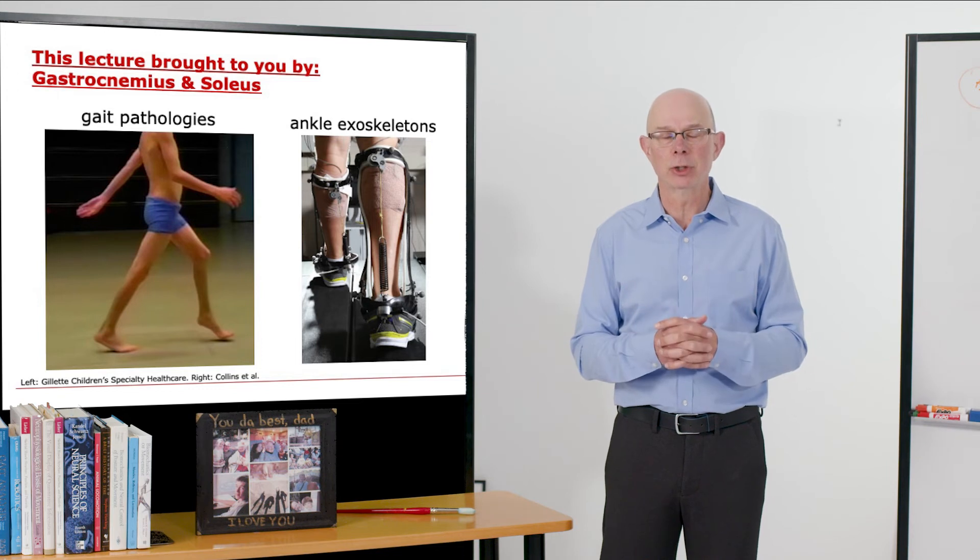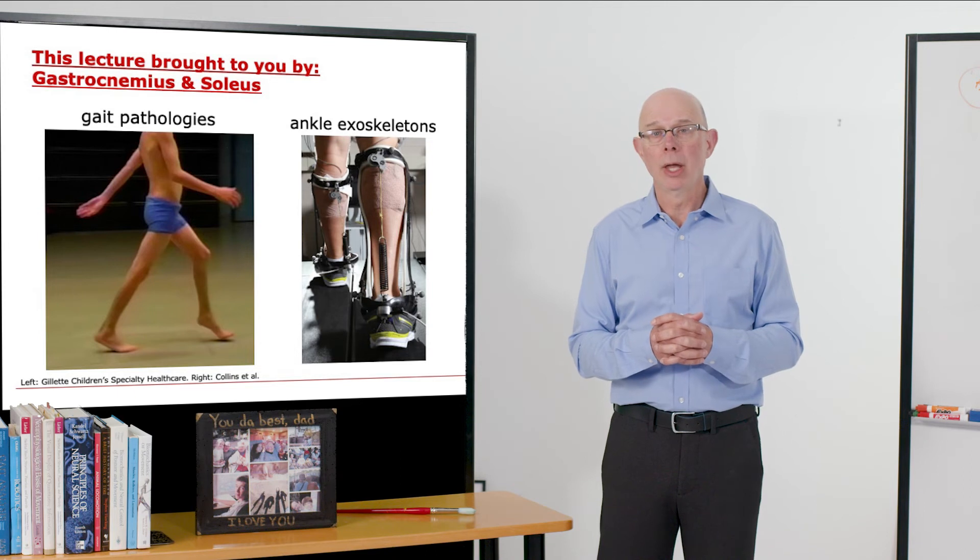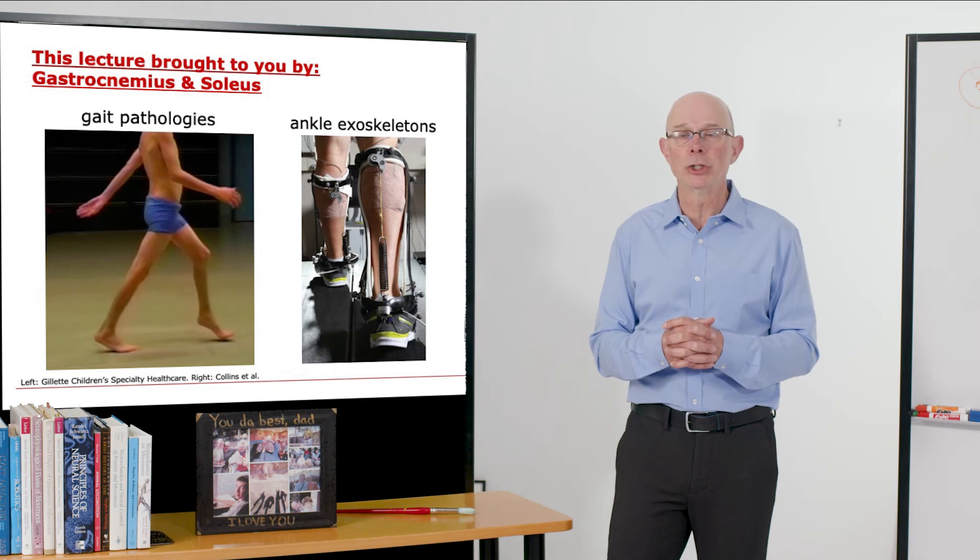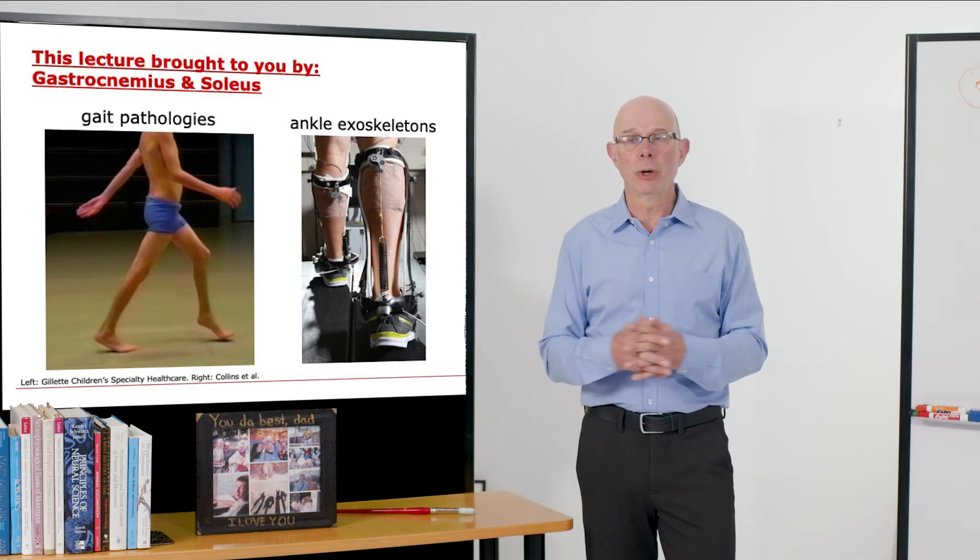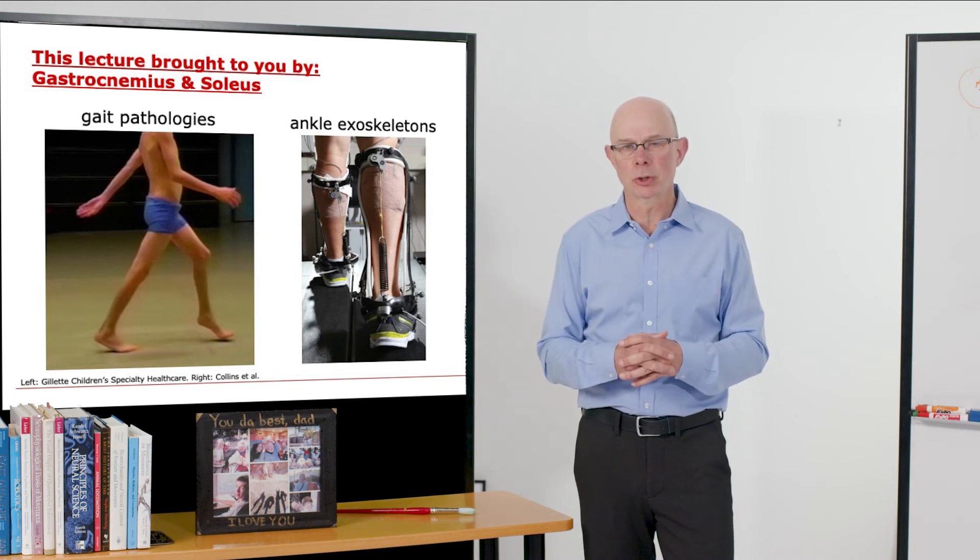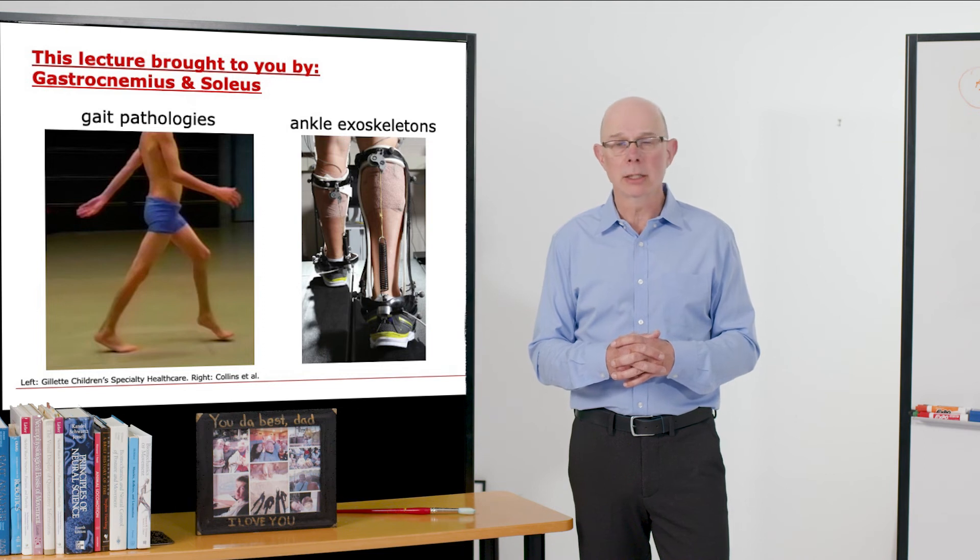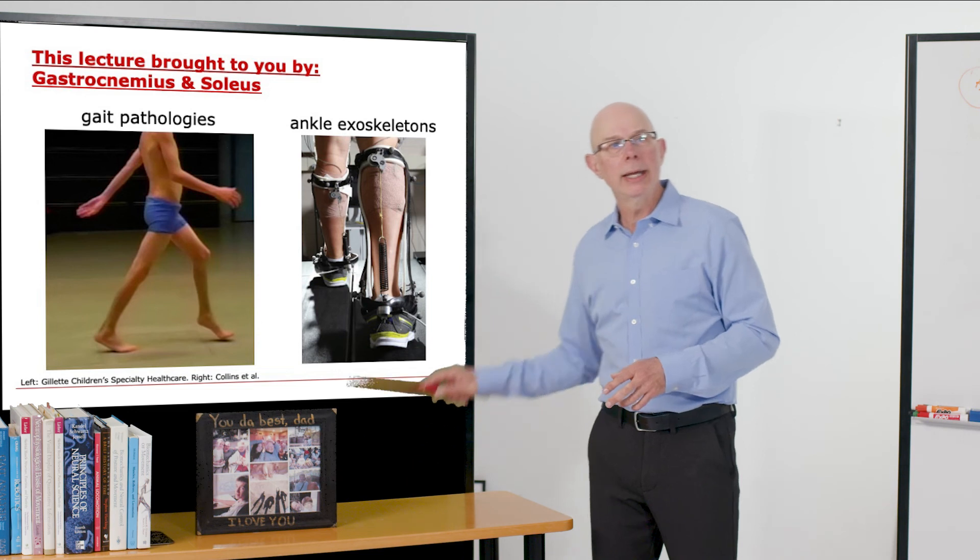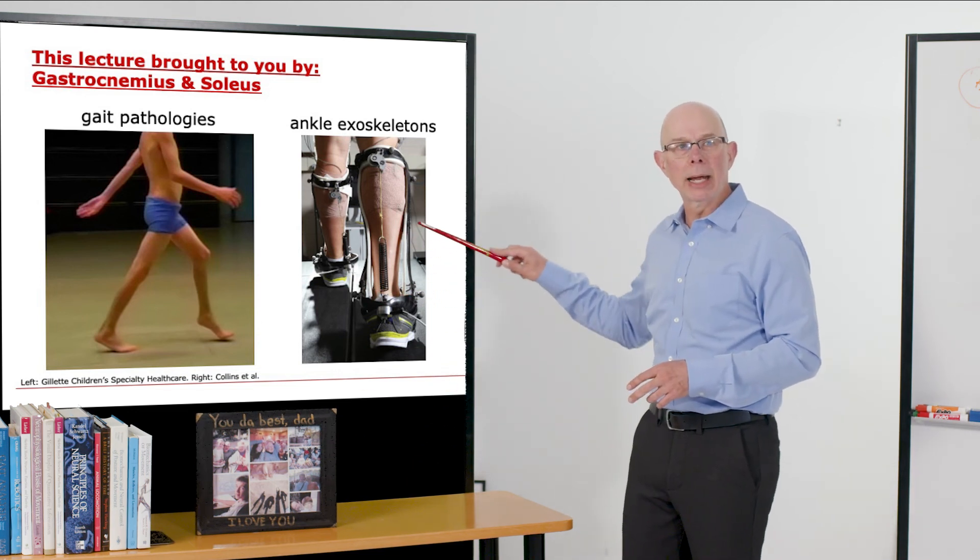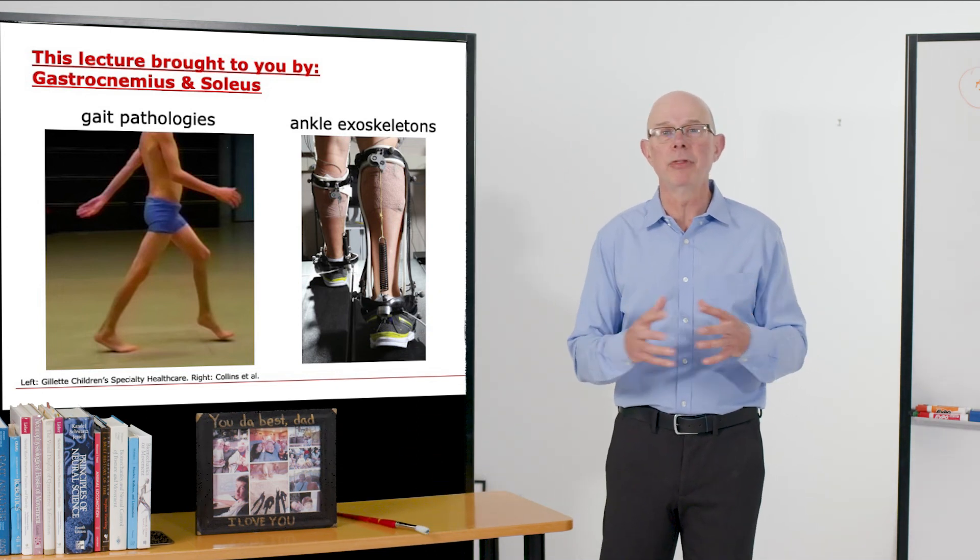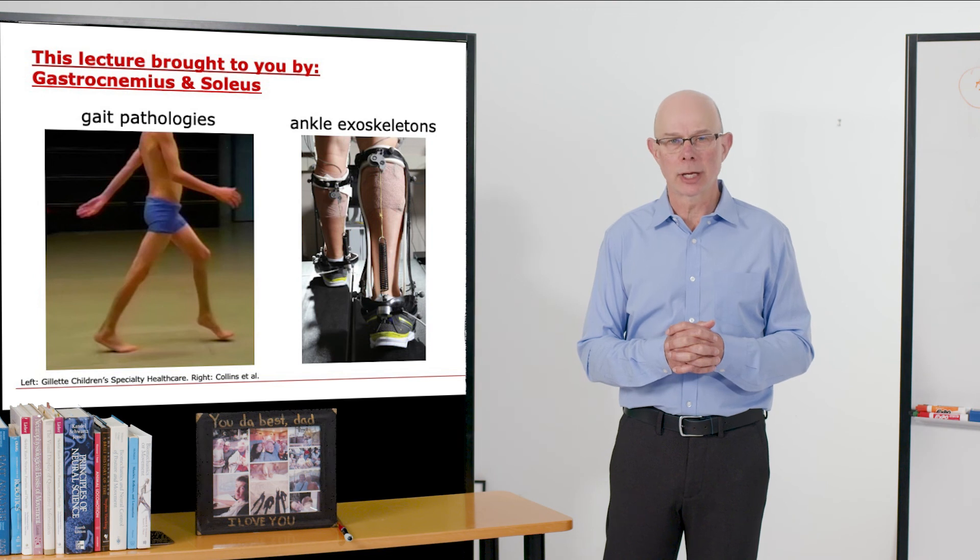These two muscles are large and generate large forces. They also consume lots of metabolic energy. If we want to save metabolic energy during walking, one way to do that is to try to replace some of the forces that these muscles generate with a spring. Steve Collins, a colleague here at Stanford, has generated this really clever device where he is inserting a spring in parallel with the muscles. This spring generates force that can relieve the excess metabolic cost associated with walking.